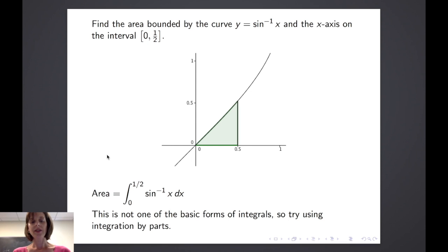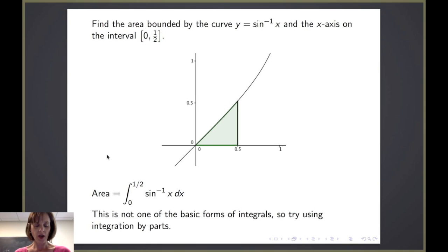Now in this case, since the inverse sine of x is not one of our basic forms, this is not something that we know how to integrate. So as you recall from the tip from our first video, if there's something that we can't integrate, we'll let that be u, and then the rest of it becomes dv.